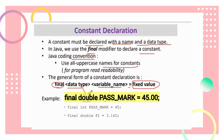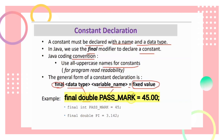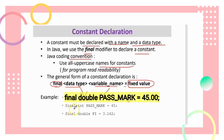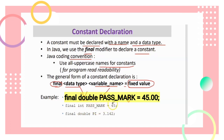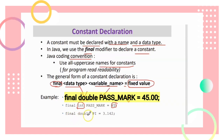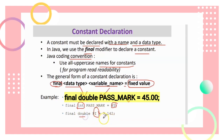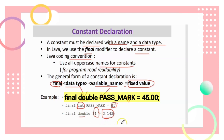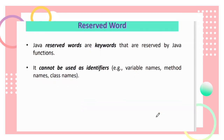Examples of constant declarations: 'final double PASS_MARK = 45.0;' uses double as the data type with a floating-point value. 'final int PASS_MARK = 45;' uses integer with value 45. For PI, we use double because the value is a floating-point number: 'final double PI = 3.142;'. Make sure you end each declaration with a semicolon.